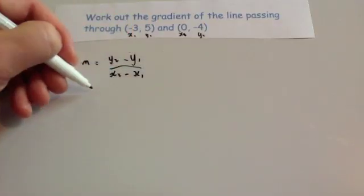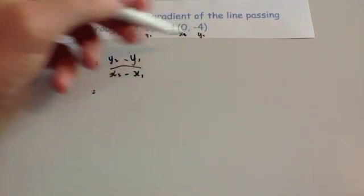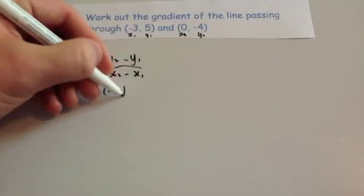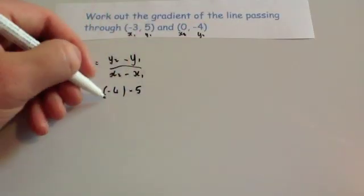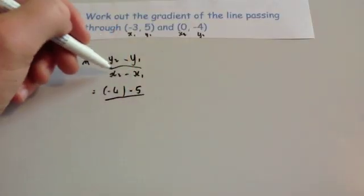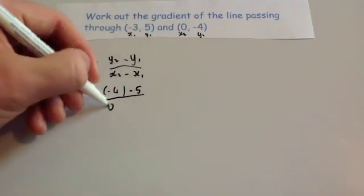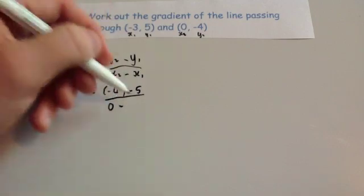So let's substitute the values in. We're going to get y2, well y2 is minus 4, minus y1, which is minus 5, divided by x2, so x2 is 0, minus minus 3.